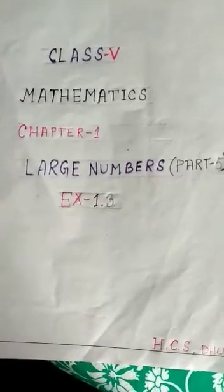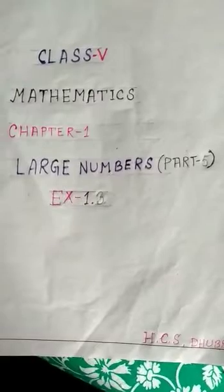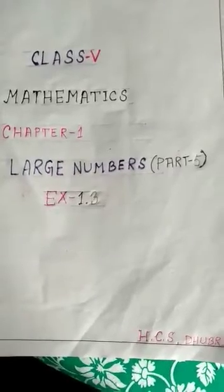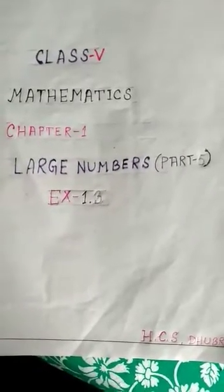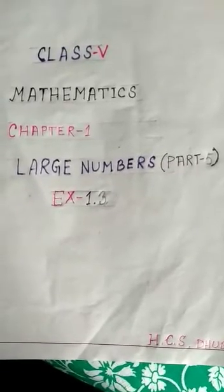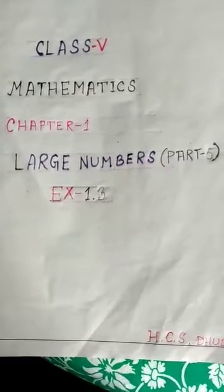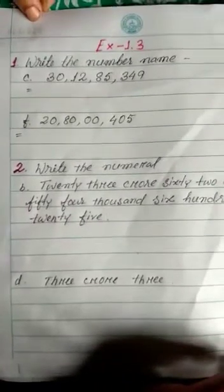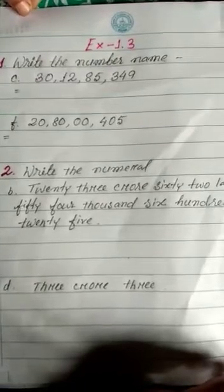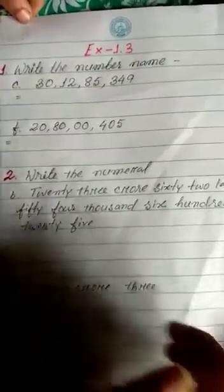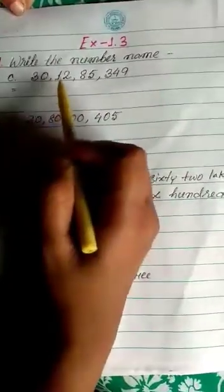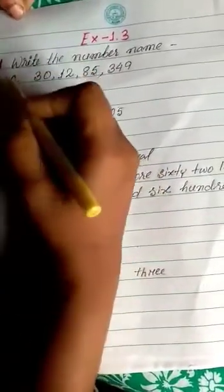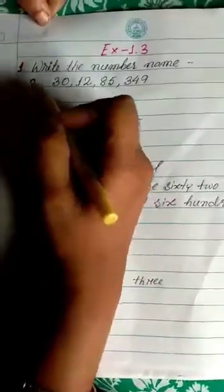Hello students, I hope you all are fine. If you have seen my previous clips, we have completed the large numbers till Exercise 1.2, and today we are going to solve the questions from Exercise 1.3. You all know how to write the number name of seven, six, and five digit numbers — the same way we will write eight digit numbers and place them in a place value chart.